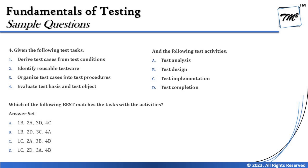Question four is a match-the-following. Given the following test tasks and test activities, which of the following best matches the task with the activities? The test phases are on the right-hand side and the task activities are on the left — we just have to map them. For this, all you need is to know the test process well, and by now we have discussed it three times, so we know exactly what it is.